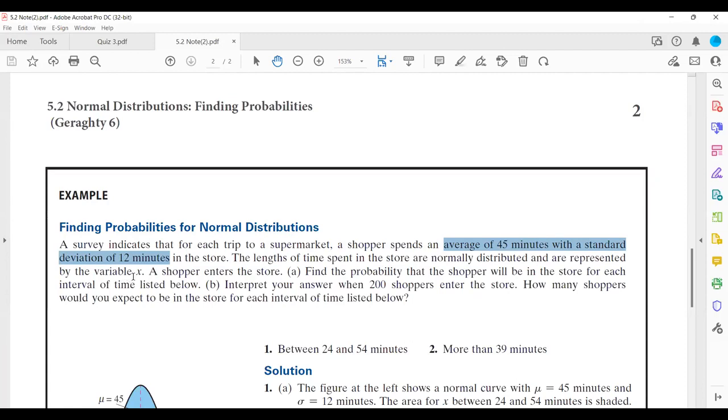It doesn't mention anything about confidentiality of the data, so we're going to assume that the data are publicly accessible. The question says, find the probability that a shopper will be in the store between 24 to 54 minutes. What is the probability that they spend more than 39 minutes in the store?